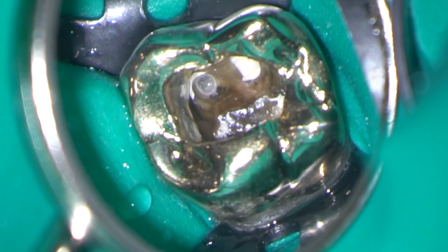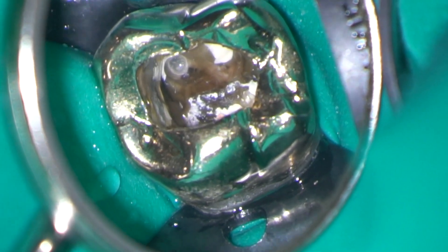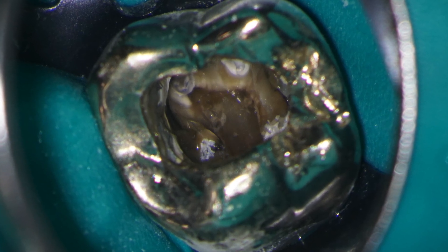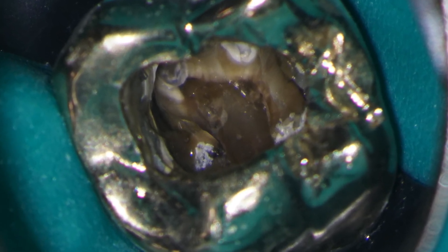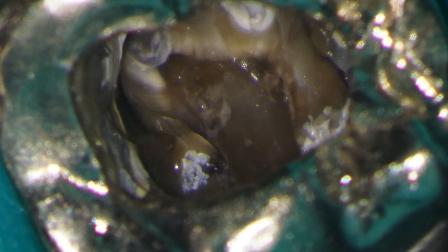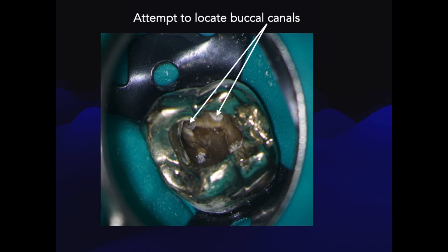With the temporary removed we can now see the pulp floor and the obturating material in the lateral canal. We're going to use the pulp floor map to guide us to where the orifices of the canals are. You can see that the base of the cavity is dark — this is where the pulp floor is going to be — and you can also see where the previous attempt at locating the buccal canals has been, but these are placed far too buccally.